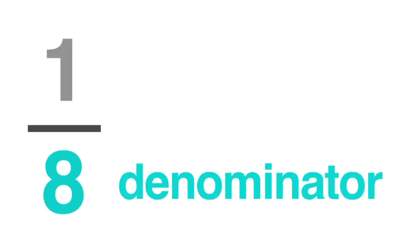A fraction has two parts. The denominator, written below the line in the fraction, tells us the number of parts the whole has been divided into.